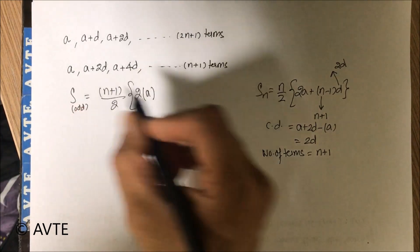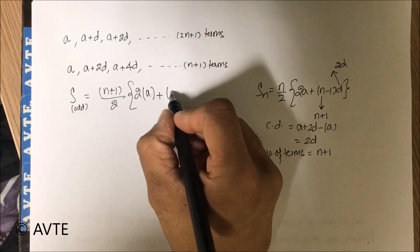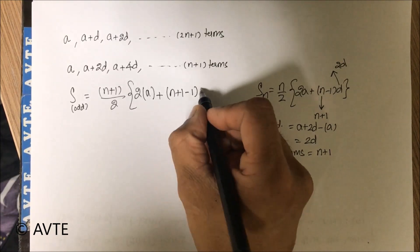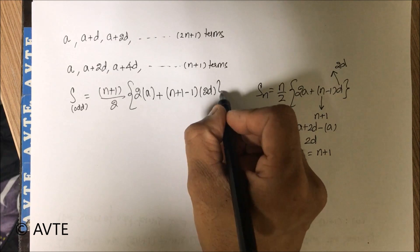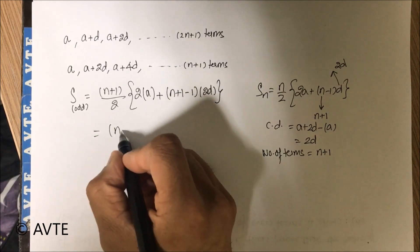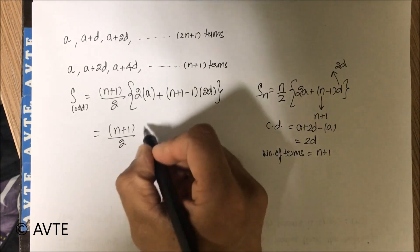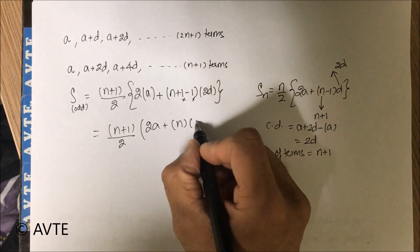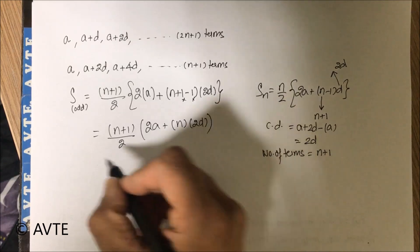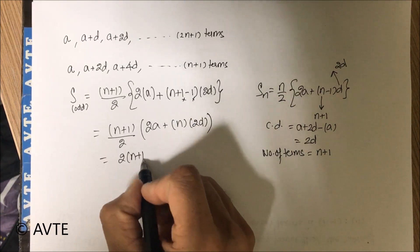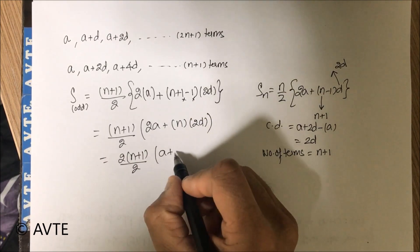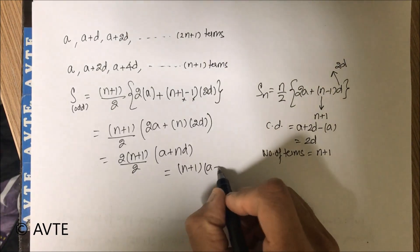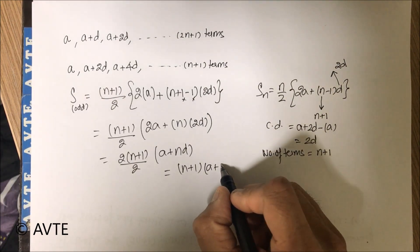So it turns to n plus 1 by 2 times 2a, because the first term is a, plus n plus 1 minus 1 into 2d. This is n plus 1 upon 2 times 2a into n, because this 1 and minus 1 is gone, into 2d. So we can take 2 common, and clearly we are left with the expression n plus 1 into a plus nd.